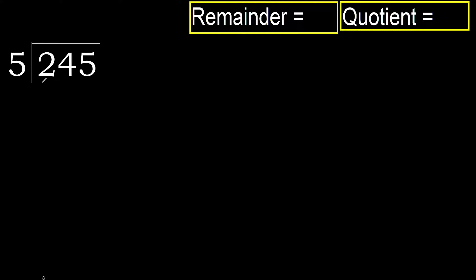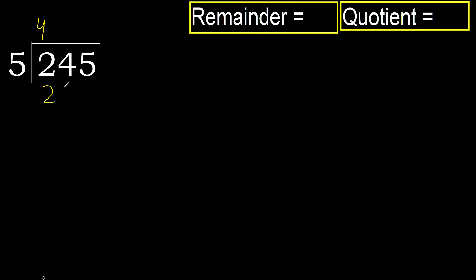245 divided by 5. 2 is less, therefore next. 24 is not less, therefore with 24, 5 multiplied by which number is nearest to 24 but not greater. 5 multiplied by 5 is 25, which is greater. 5 multiplied by 4 is 20, which is not greater. 24 minus 20 is 4. Next, bring down: 45.